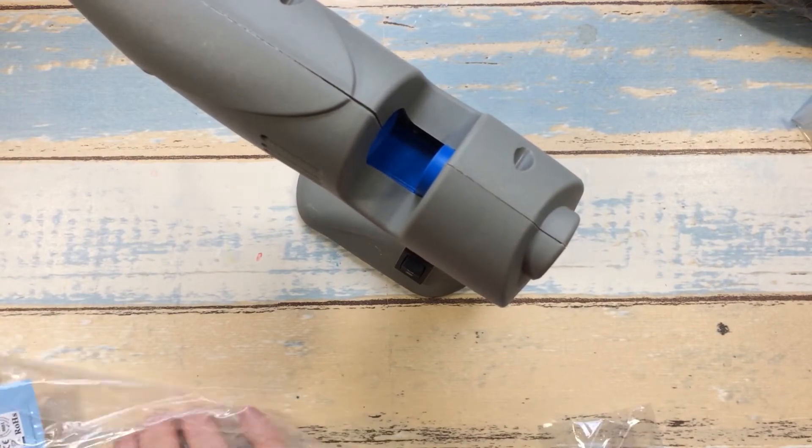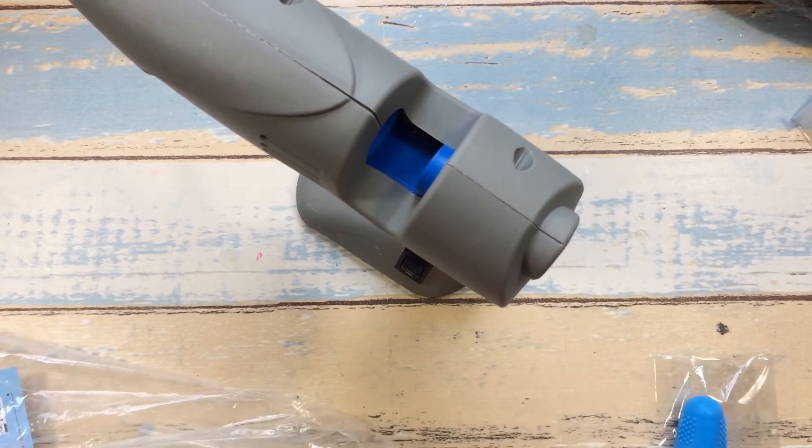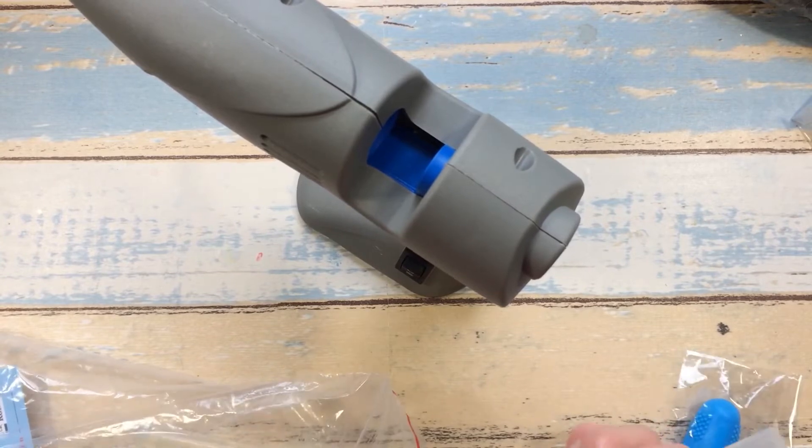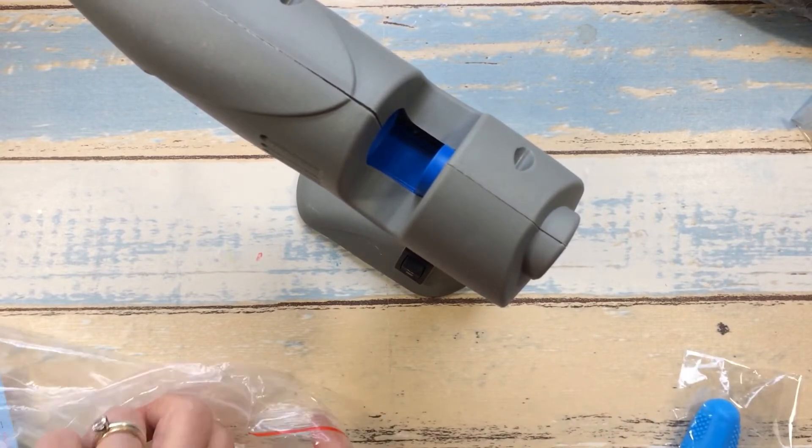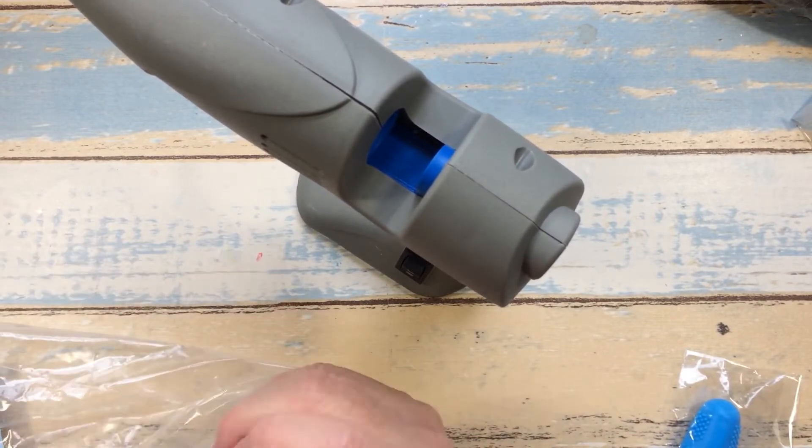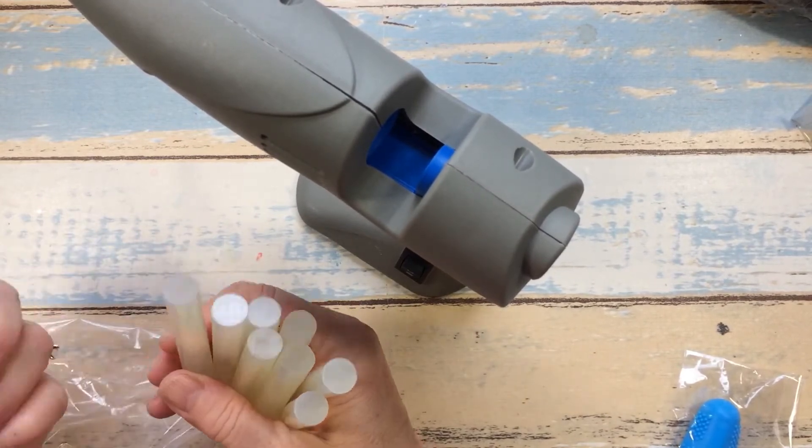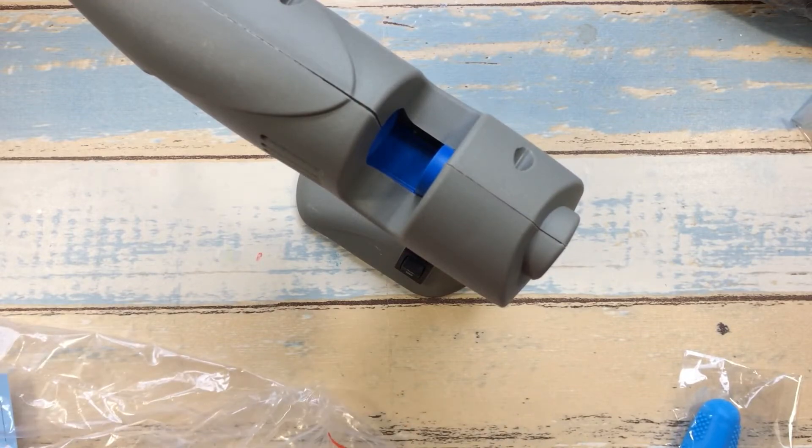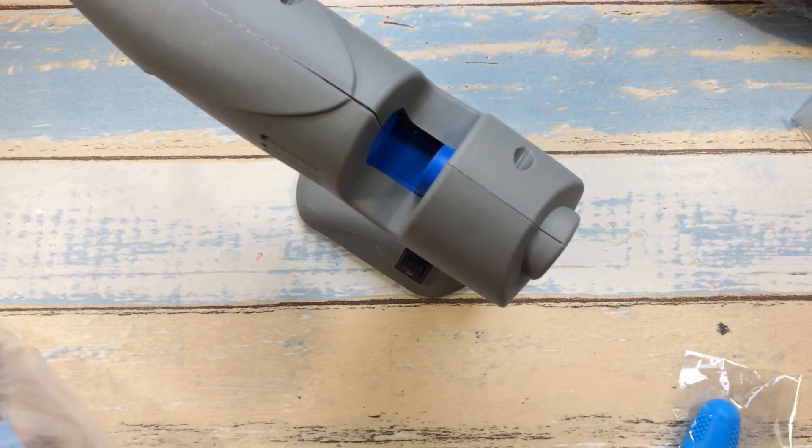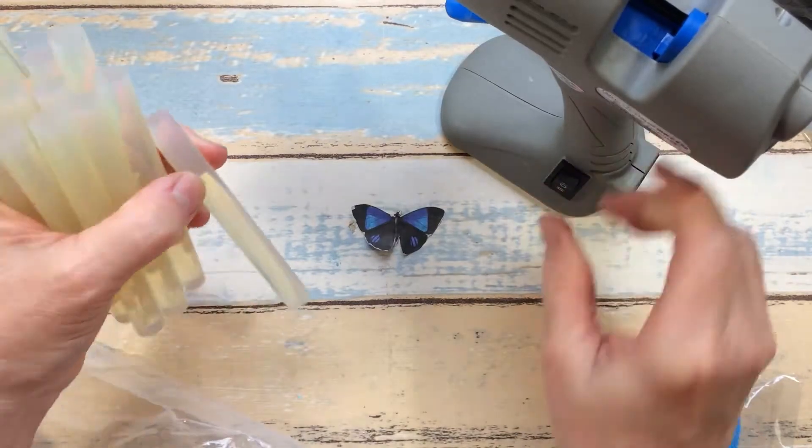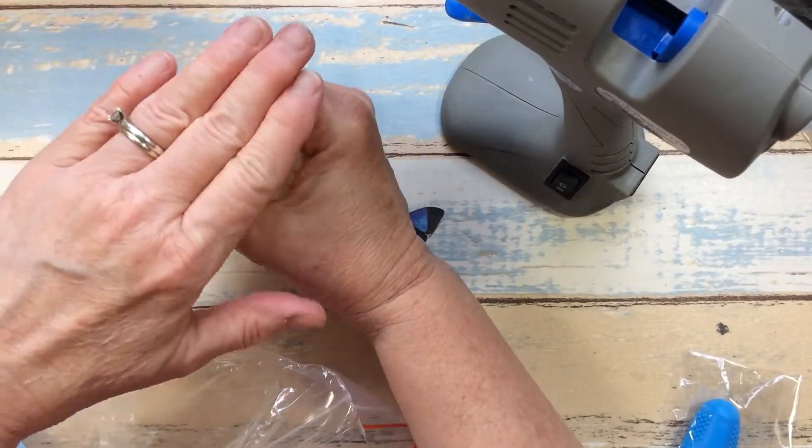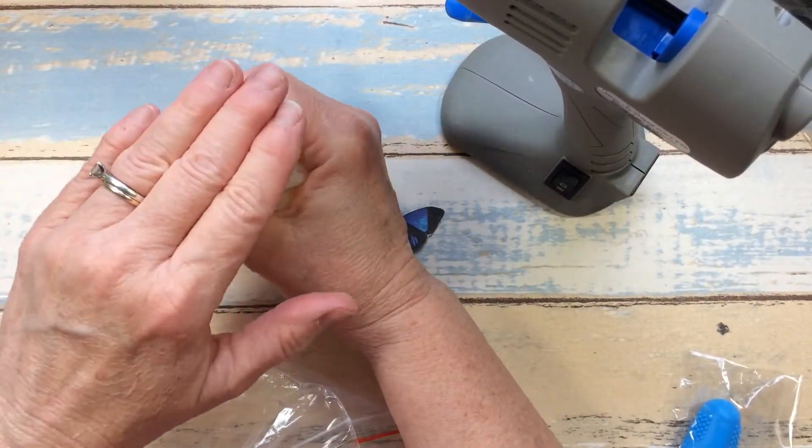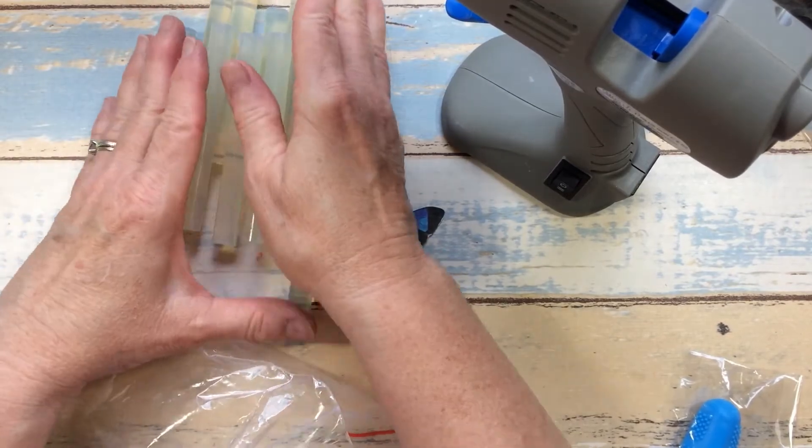Let's see what else you get in here. It comes with glue sticks. You get three, four, five, six, seven, eight, nine, ten, eleven - you get a dozen glue sticks, and they are the short ones, just a regular length glue stick.